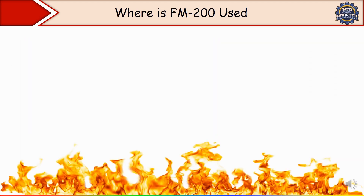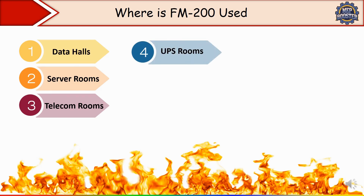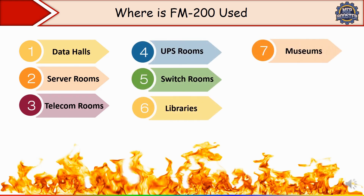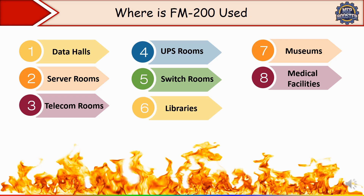FM-200 fire suppression systems are used in data centers, data halls, server rooms, telecom rooms, UPS rooms, switch rooms, libraries, museums, and medical facilities. As discussed, it is commonly used in areas where a water-based fire suppression system like sprinklers could damage sensitive equipment or valuable assets, so FM-200 is the preferred choice.